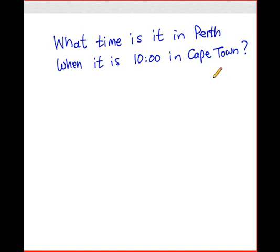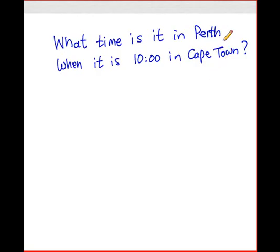This is a typical question that you might come across in an exam paper. The question reads as follows: What time is it in Perth when it's 10 o'clock in Cape Town? The first thing I want you to realize is that everything you need to solve this problem is given to you in the question paper, in this very sentence, as well as you need to use your time zone map.